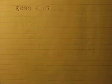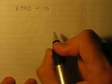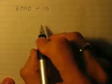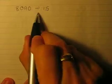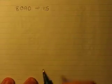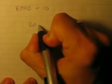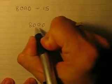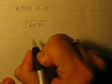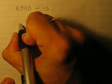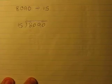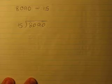We're going to do an example of long division. This question is 8090 divided by 15. We put the 8090 underneath the division sign and put our divisor out the front to the left. That's how we write our division algorithm.